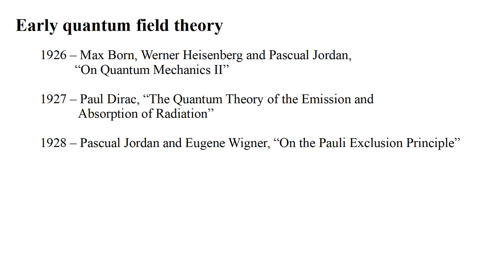In 1928, Jordan and Wigner's paper on the Pauli exclusion principle showed how to make creation and destruction operators compatible with the exclusion principle, thereby allowing the concept to be extended to electrons. We will explore these ideas in the next video.